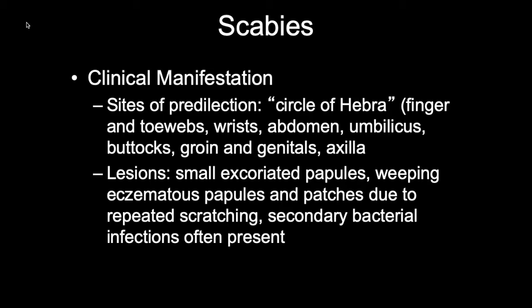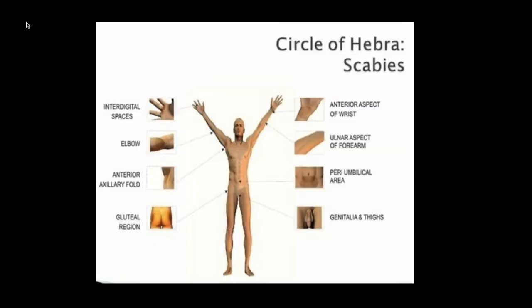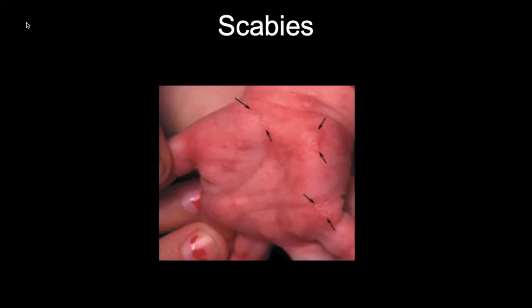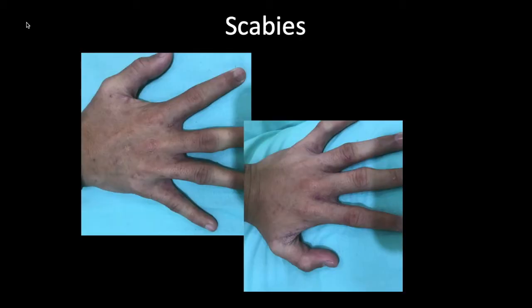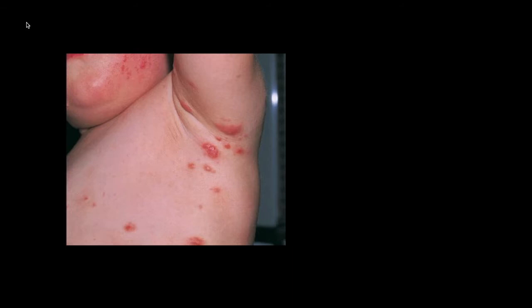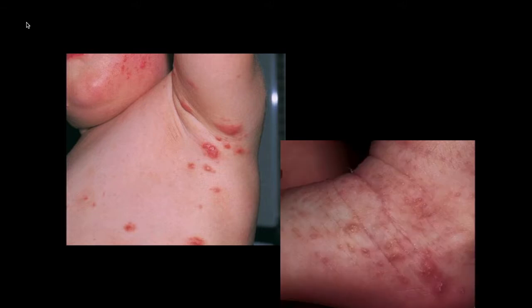Sites of predilection of scabies is known as the circle of Hebra, which comprises the finger and toe webs, the axillary area, peri-umbilical area, the wrist, the abdomen, groin, and buttocks. Photos show the palm of an infant with pruritic papules, finger webs and dorsum of the hand of a teenager, excoriated papules, axillary folds with papules and nodules in an infant, and pruritic papules at the ankle flexure of an infant.